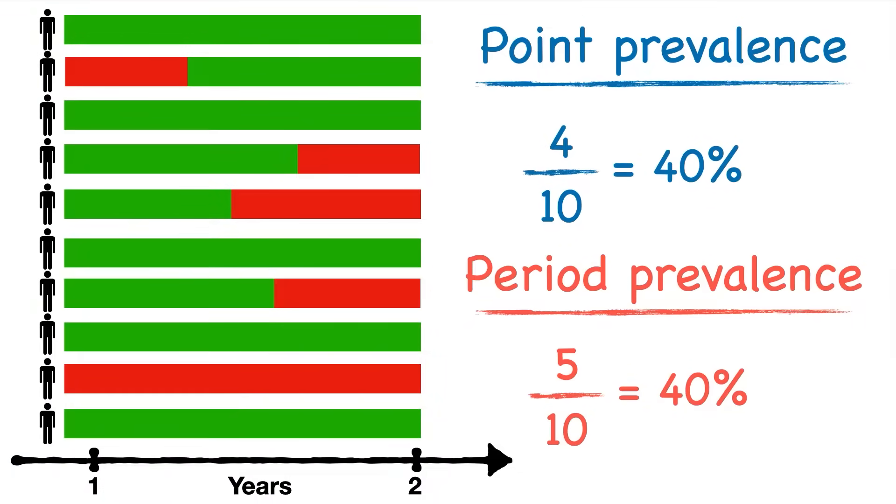That's not the case with a period prevalence. A period prevalence would count up the people who had the disease during that year, even if they came into that year with pre-existing disease. So we're not just counting new cases.